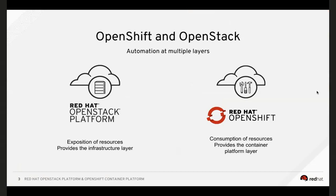On the consumption side of things, we have OpenShift. OpenShift is a platform as a service that can consume many of these resources provided by OpenStack — on top of OpenStack — and we are doing it in the same way as OpenShift does it on other platforms such as AWS or Azure.